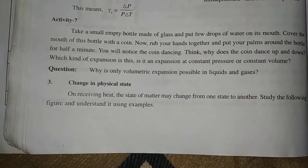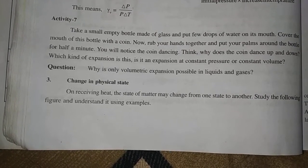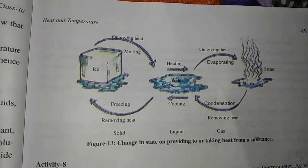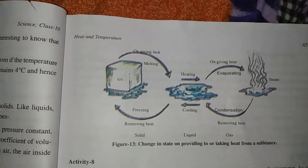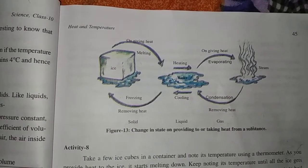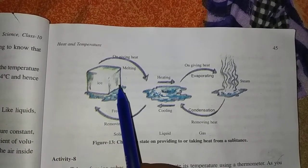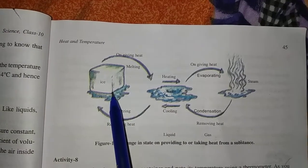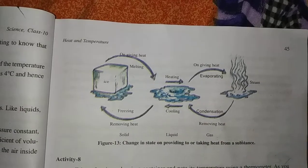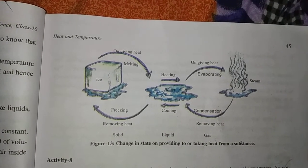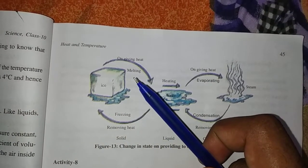Change in physical state. First let's understand this. Imagine you are taking a 1 kg ice slab. Now what do you do? You add heat. So when you add heat to 1 kg ice, then what will happen? It will melt — whatever heat is getting added, the ice starts to melt.